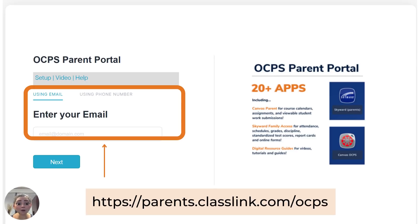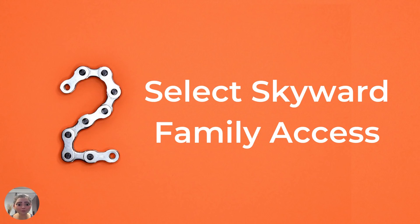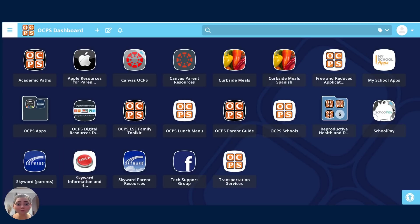If you're unable to log in, just click the help button to report your problem. Then you'll select Skyward Family Access from the dashboard. It's in the lower left-hand corner of the screen and is a blue Skyward app.